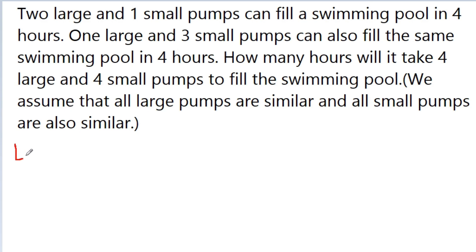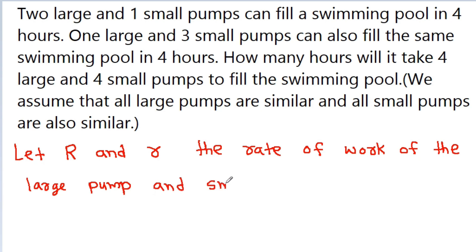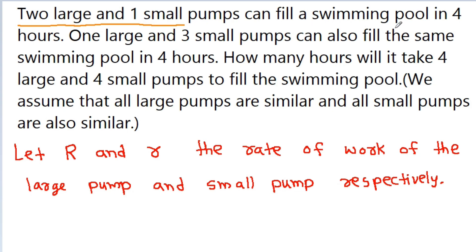Here, if we assume capital R and small r is the rate of work of the large pump and small pump respectively. Then, it is given that 2 large and 1 small pump can fill the swimming pool in 4 hours. So we get 2 times capital R plus small r, and the time taken is 4 hours, so we multiply by 4, that is equal to 1.